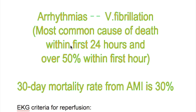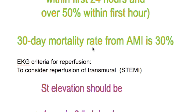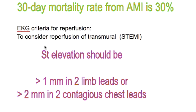The most common cause of death in myocardial infarction is ventricular fibrillation, which accounts for most deaths within the first 24 hours. 50% of deaths occur within the first hour, and the 30-day mortality rate from acute myocardial infarction is 30%.